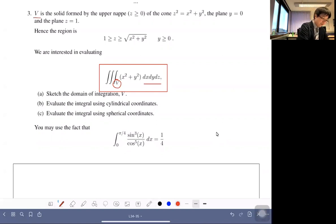And over V, right, so V is a solid formed by the upper nappe (I have no idea) of z larger than zero of the cone and the respective planes there.